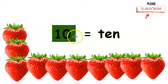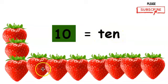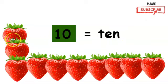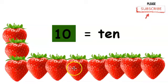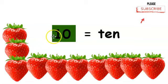This is the number ten. This is how you write ten. Let's count how many strawberries we have below. One, two, three, four, five, six, seven, eight, nine, ten strawberries. Ten.